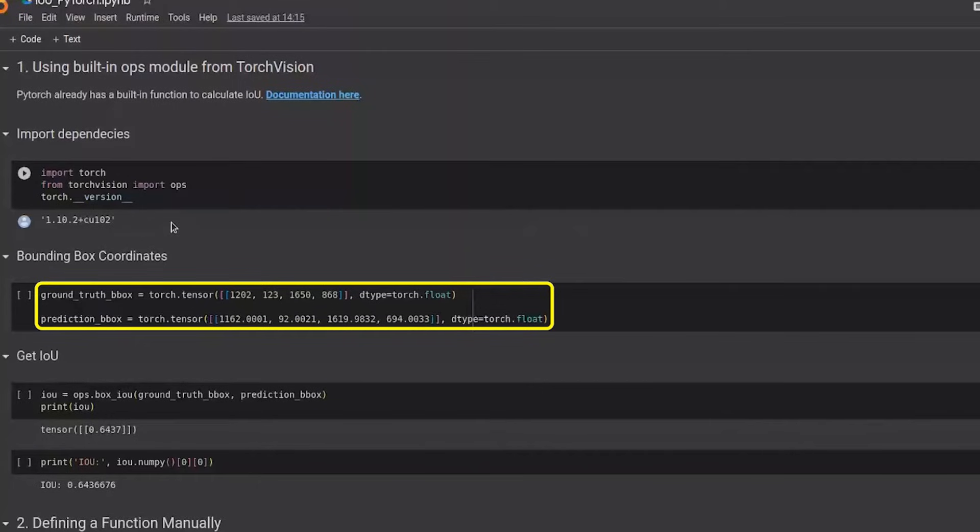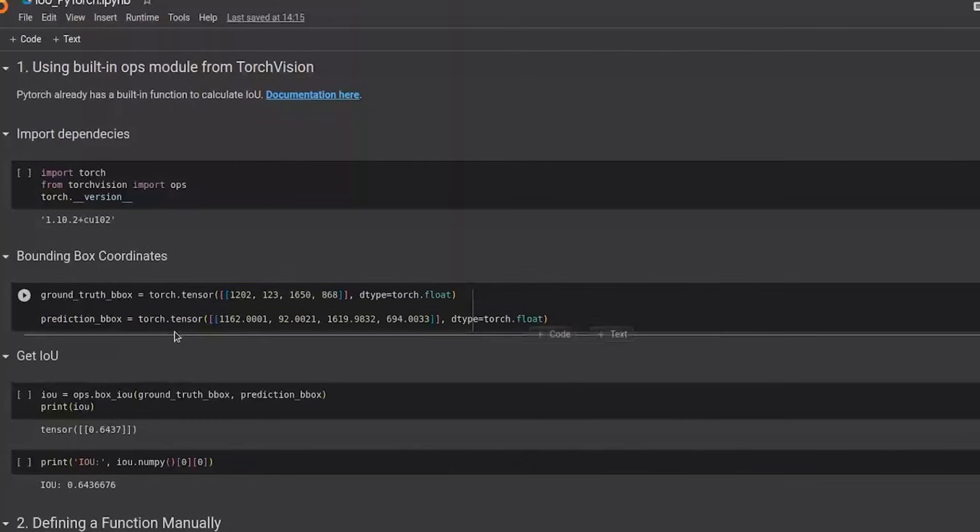In the next cell, the coordinates for both the ground truth and prediction bounding boxes are defined. From here, the IoU metric can simply be calculated by using the ops.box_IOU function and passing both the predefined bounding box coordinates to it.